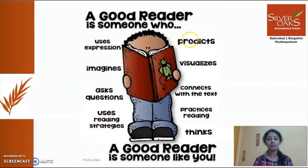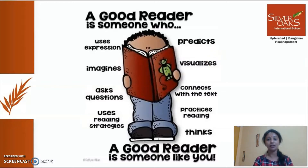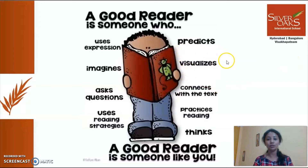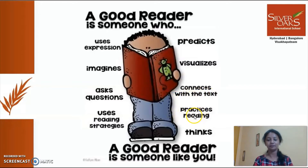Most importantly, a good reader predicts what is going to happen next. Like the Bukasura novel is so interesting that whenever you read a part, you try to predict what happens next. A good reader also visualizes — they imagine with their eyes — then they connect with the text they are reading, and they also practice reading every day.